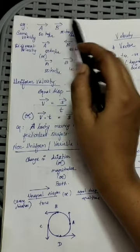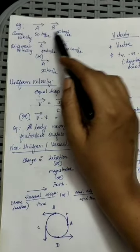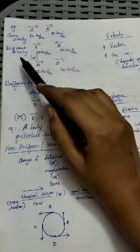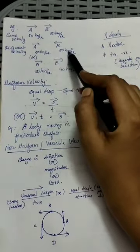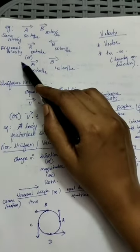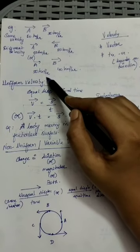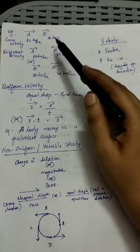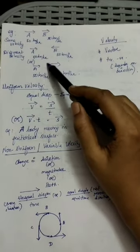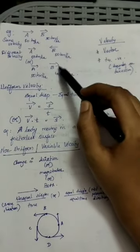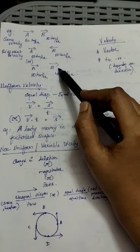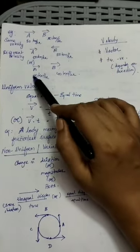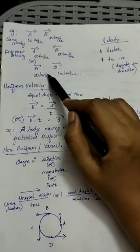Consider two objects A and B both traveling at 50 km/h. If they travel in the same direction with the same speed, they have the same velocity. If the direction changes — one goes forward and the other goes in the opposite direction — the velocity is different even though the speed is the same. Also, if one travels at 50 km/h and the other at 40 km/h along the same road, the velocity is different. For same velocity: same magnitude and same direction. For different velocity: different direction with same magnitude, or same direction with different magnitude.